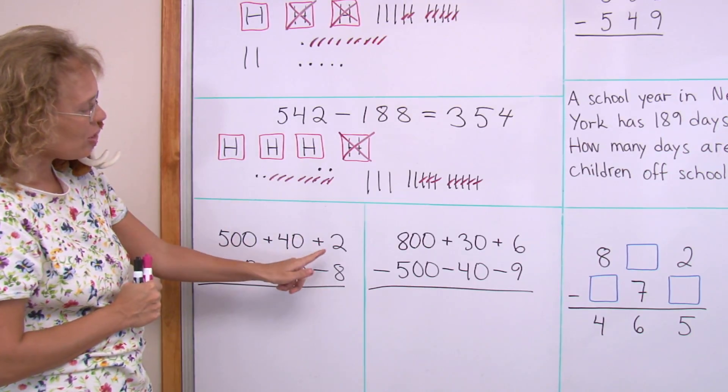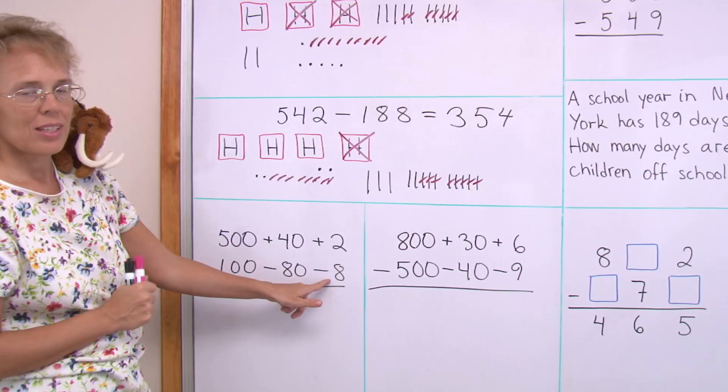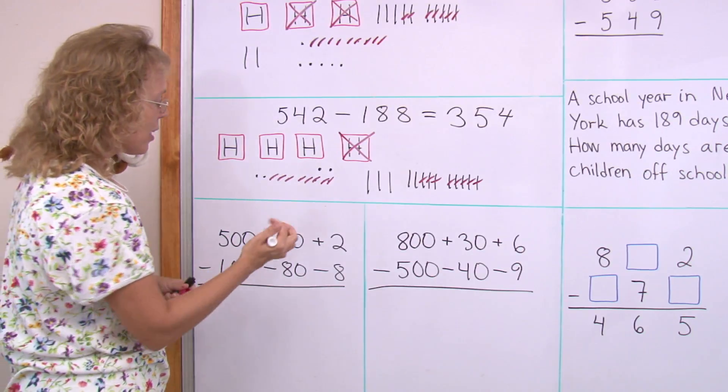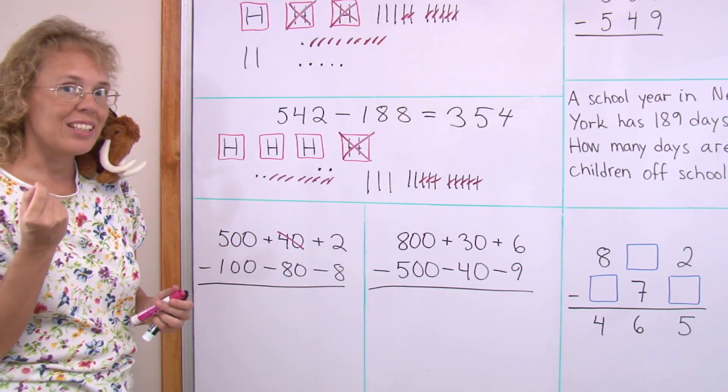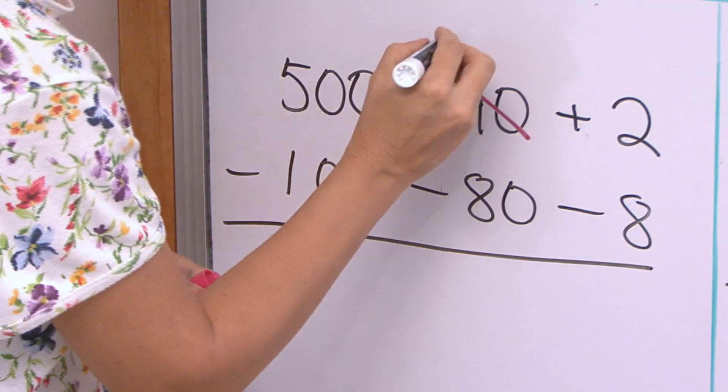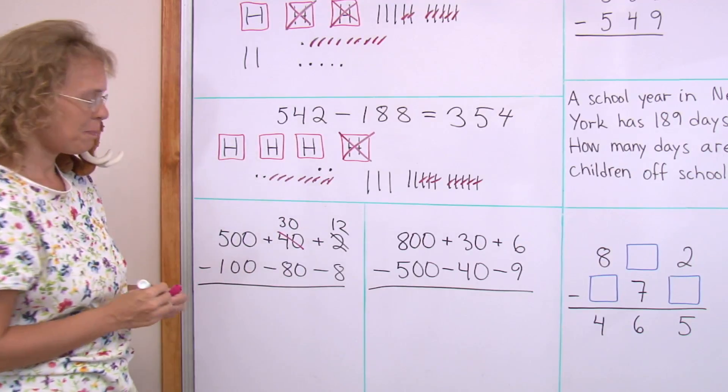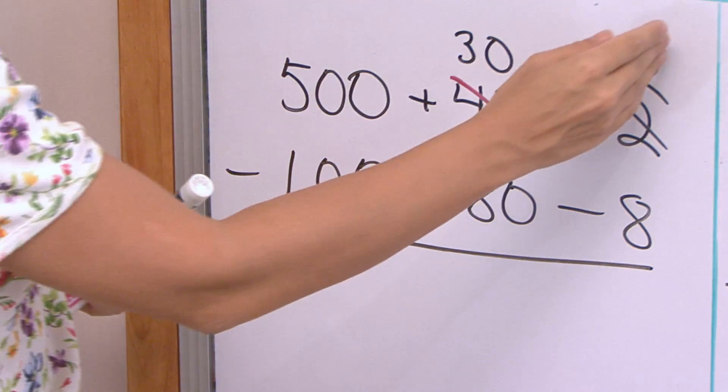And to start the subtraction, two minus eight. We cannot do that so we will regroup, as usual. From forty we take away ten. We take one ten, so it leaves thirty here. And over here we get twelve, like that. Now I can subtract here twelve minus eight.